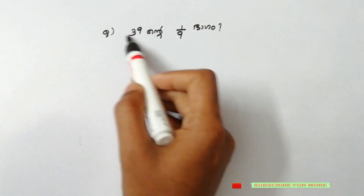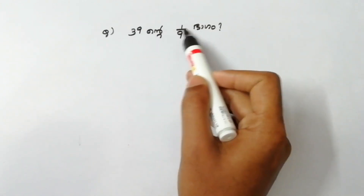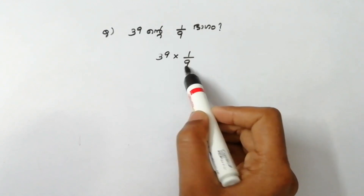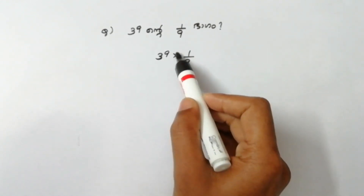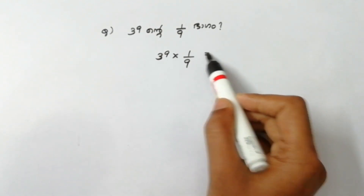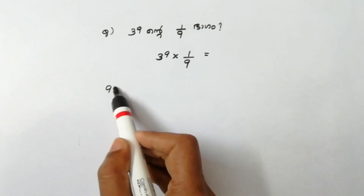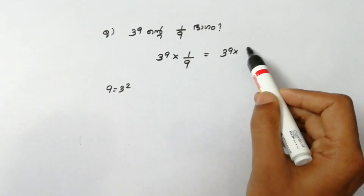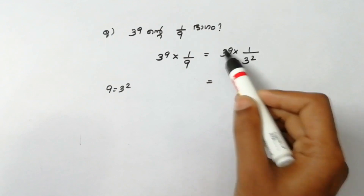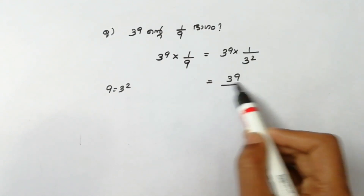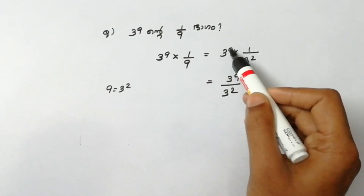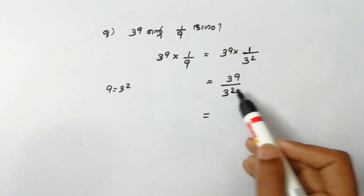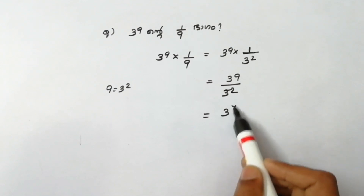Let's start with the next question. 3 raised to 9 — we apply the rule. We can use 3 raised to 9, and this is 3 raised to this rule.